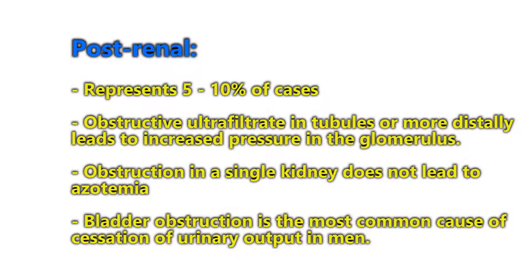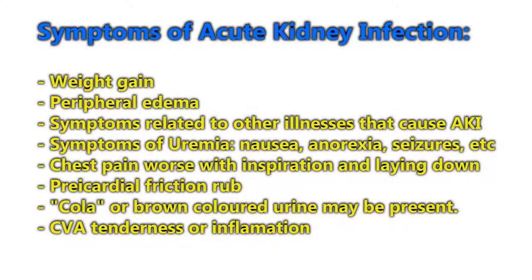Symptoms of AKI include weight gain and peripheral edema, as well as symptoms related to the underlying illness causing the injury. Symptoms of uremia include nausea, vomiting, anorexia, seizures, confusion, and coma. Patients can also experience chest pain worse with inspiration and when lying down, and a pericardial friction rub. Another key symptom to look for is cola-colored urine — the patient may present complaining their urine looks like Coca-Cola, which may represent glomerulonephritis. CVA tenderness is also possible, usually due to stretching of the kidney capsule or inflammation.